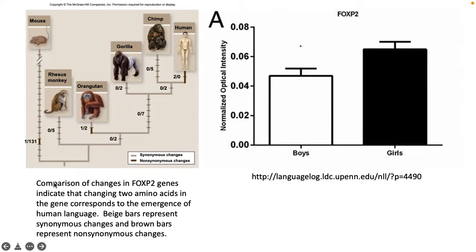This slide shows the comparison of changes in FOXP2 genes and how just two amino acids correspond to the emergence of human language. The beige bars represent synonymous changes and the brown bars represent non-synonymous changes. This graph is looking at the expression of FOXP2 genes in humans — boys versus girls — and I'll let you make that conclusion on your own.